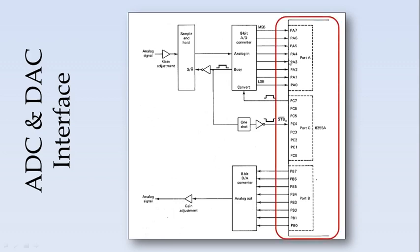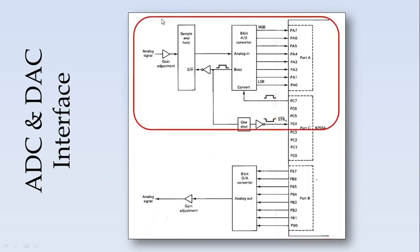This is a typical ADC and DAC interface with 8255A. This part represents Port A, Port B, and Port C — the 24 IO pins of the 8255A peripheral interface. This section indicates Group A, which includes Port A and Port C upper. Port A's 8 pins and Port C's 4 pins are connected to the ADC interface. This is an 8-bit analog to digital converter and this is a sample and hold circuit.